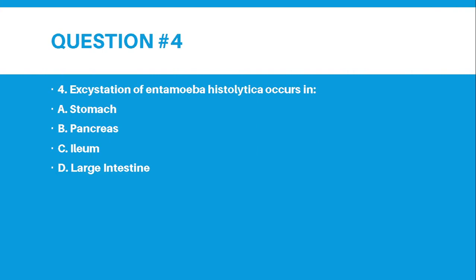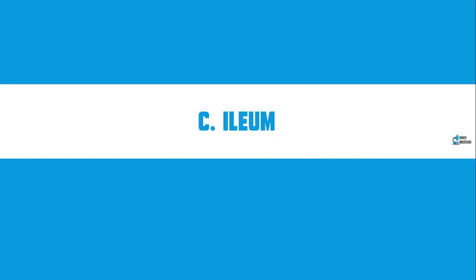Number 4. Excystation of Entamoeba histolytica occurs in: A, Stomach; B, Pancreas; C, Ileum; or D, Large Intestine. And the answer for number 4 is letter C, the Ileum of the Small Intestine.